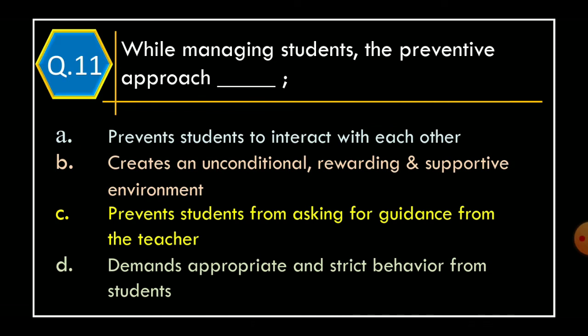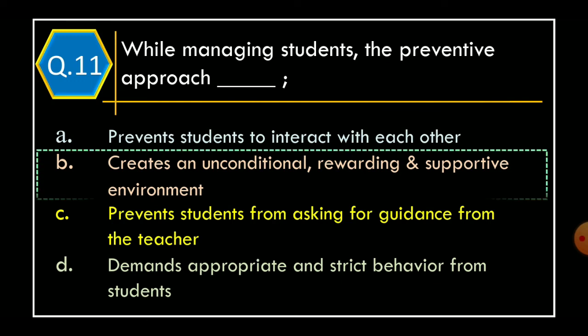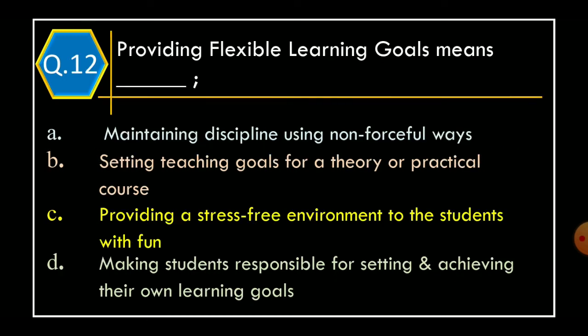Question 11: While managing students, the preventive approach — Option A: prevents students from interacting with each other; Option B: creates an unconditional rewarding and supporting environment; Option C: prevents students from asking for guidance from the teacher; Option D: demands appropriate and strict behavior from the students. The correct option is Option B: creates an unconditional rewarding and supporting environment.